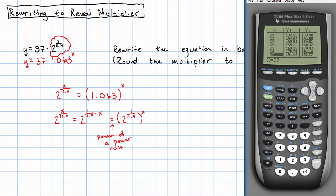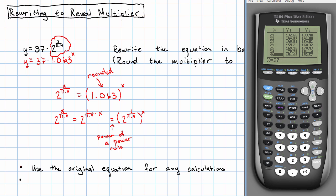Well, remember this was rounded. When we're making this move, we will want to use the original equation for any calculations, but use the rewritten multiplier for comparisons or interpretations.